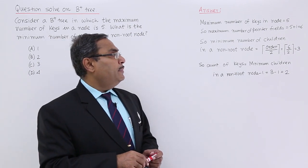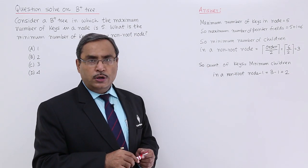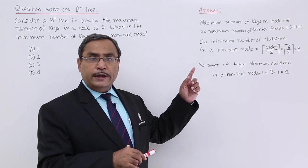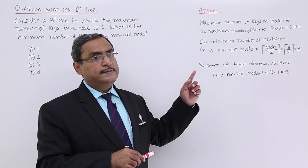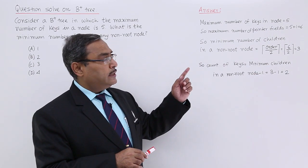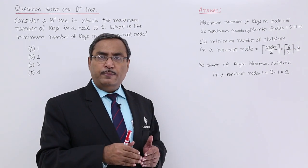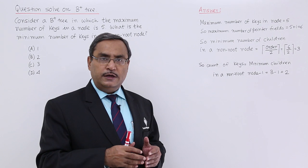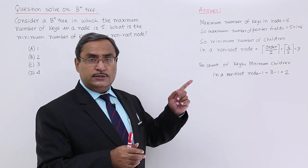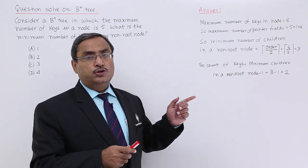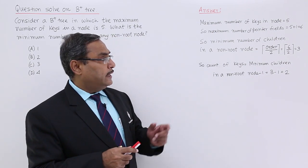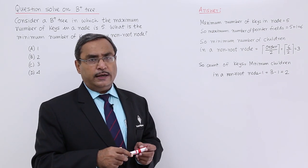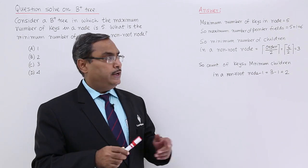The minimum number of children in a non-root node is equal to ceiling of order by 2. Here, this order is 6 because the order of a B+3 tree is actually decided by the maximum number of pointer fields in a node. So, here it is 6. Order by 2 ceiling of that, so that is 6 by 2 ceiling of that and I shall be going to get 3 here.